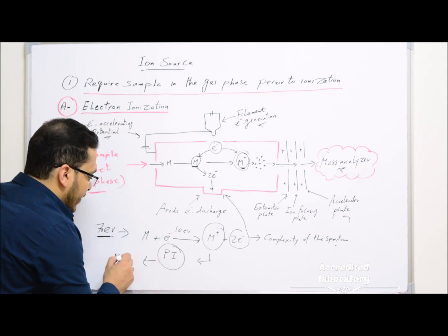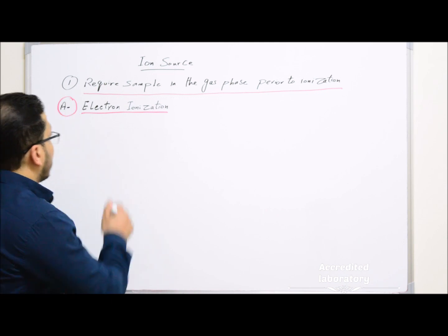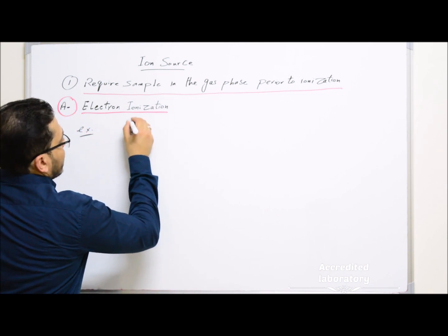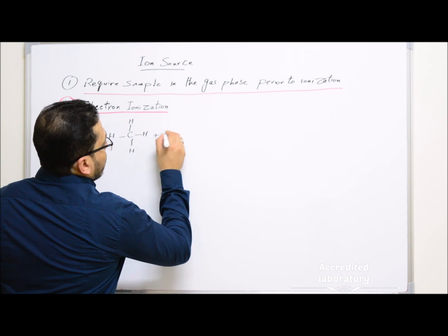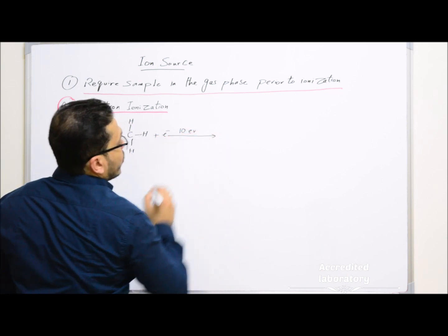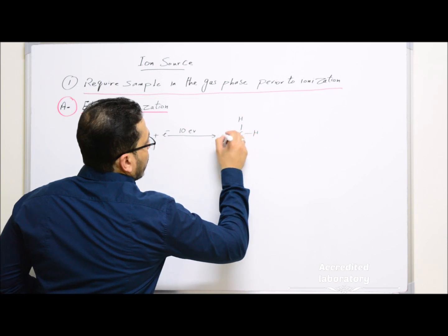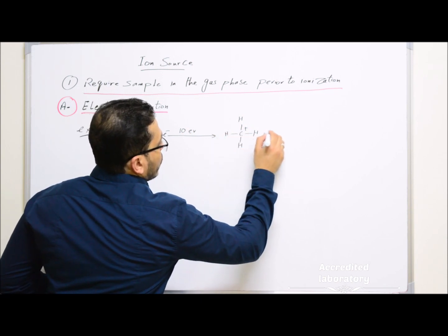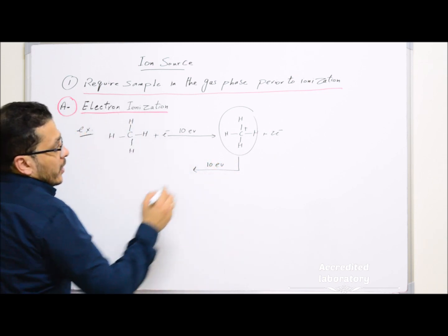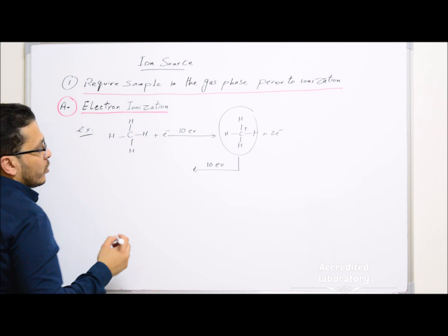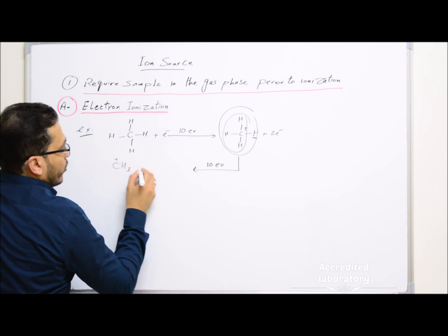These product ions will be accelerated to the mass analyzer. For example, for electron ionization of methane (CH4): by electron ionization using sufficient energy of about 10 electron volts, it will form the molecular ion CH4⁺ plus two electrons. With excess energy, this molecular ion will be fragmented to form product ions: CH3⁺ plus H free radical.